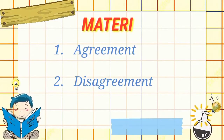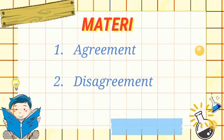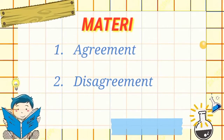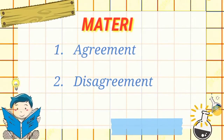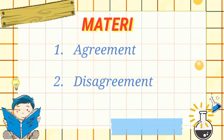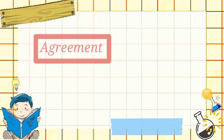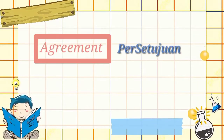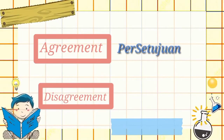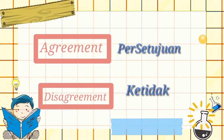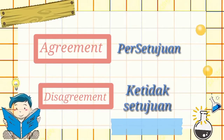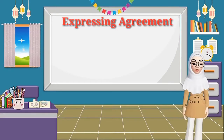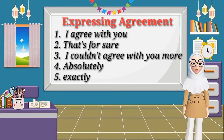This material is for class 9 semester 1, chapter 2. So what is agreement? Agreement means persetujuan (approval), and disagreement means ketidaksetujuan (disapproval). Agreement and disagreement are interrelated.